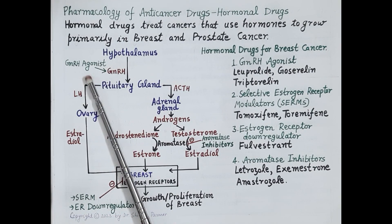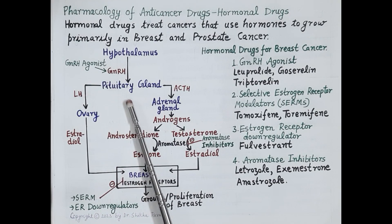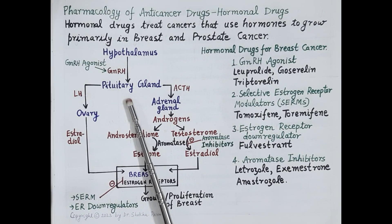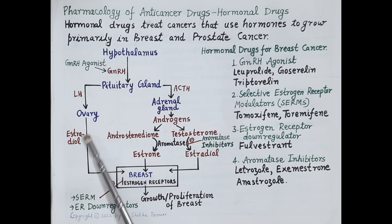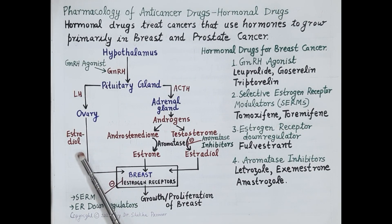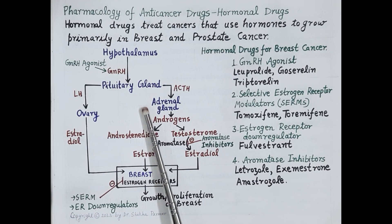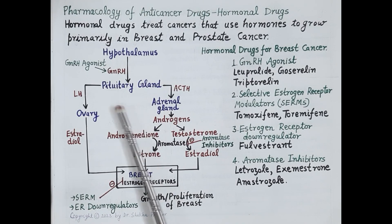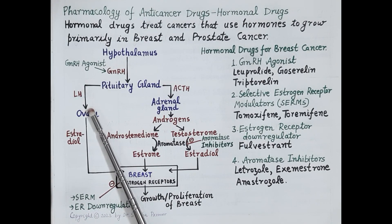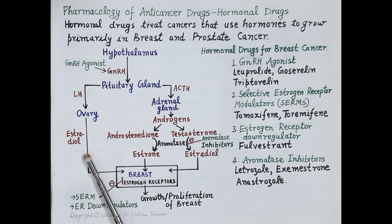The first type of drugs are the GnRH agonists. These drugs constantly stimulate GnRH receptors present on the anterior pituitary. When administered, they initially cause excessive secretion of estradiol, but chronic stimulation of GnRH receptors causes their desensitization and down-regulation. This inhibits secretion of LH and further reduces the secretion of estrogen.